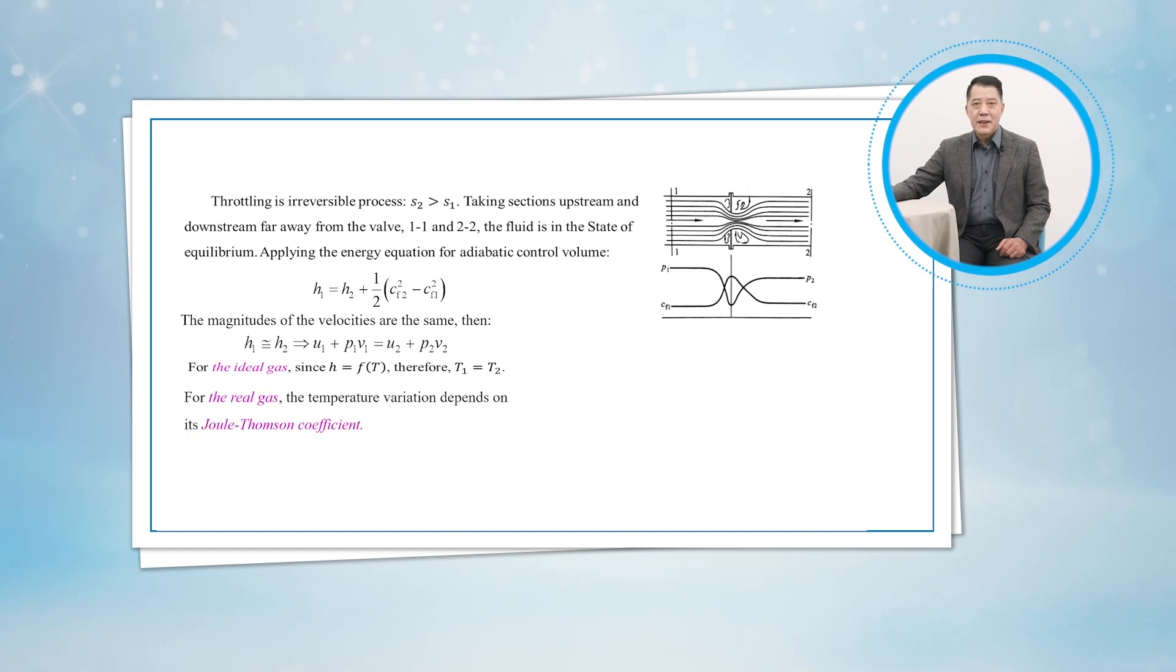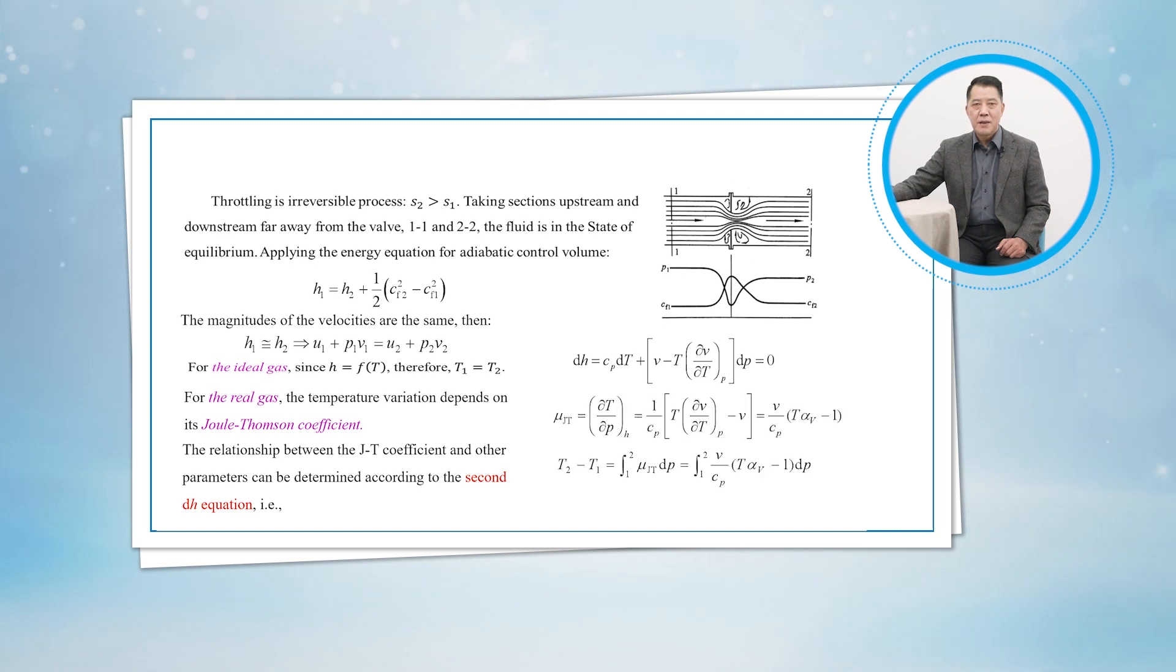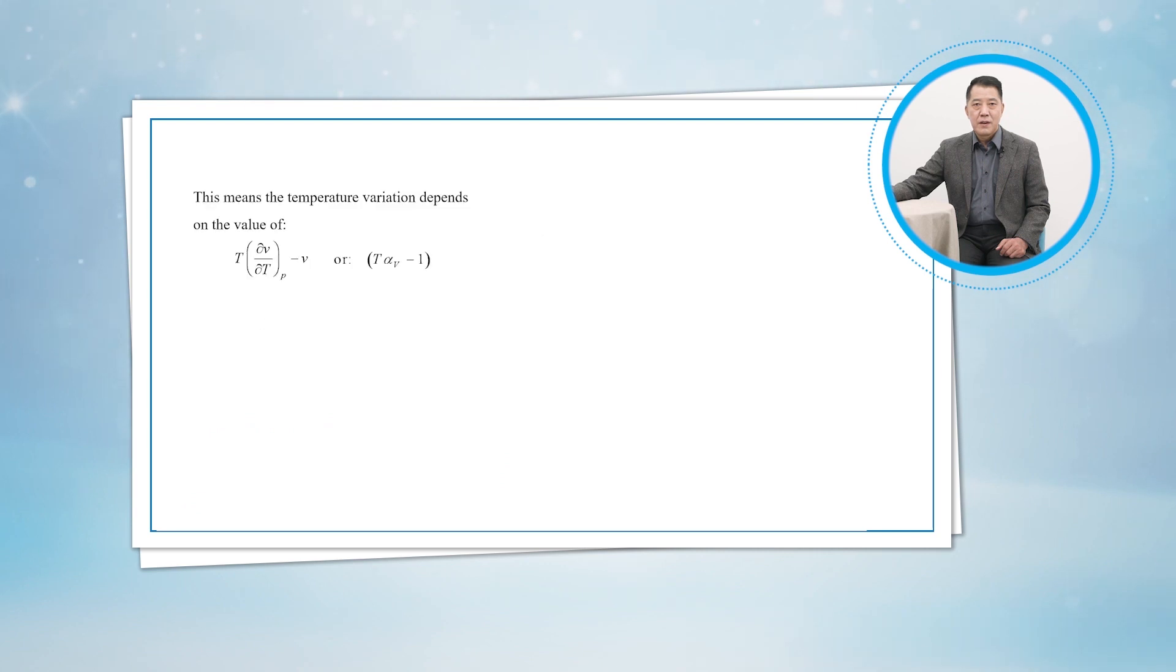For a real gas, the temperature variation depends on its Joule-Thomson coefficient. The relationship between the Joule-Thomson coefficient and other parameters can be determined according to the second T-dH equation. And then, we have temperature change during a throttling process. This means the temperature variation depends on the following values.